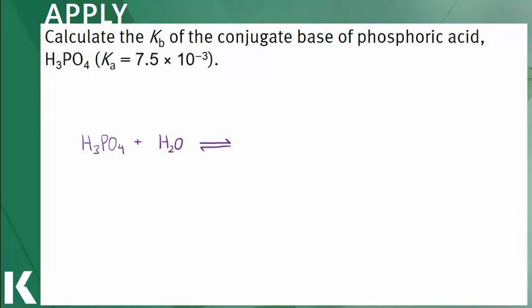The conjugate base is the result of the deprotonation of the acid. In this case, phosphoric acid will be deprotonated, which yields dihydrogen phosphate, an ion with one proton less than H3PO4. And the proton that was removed from the phosphoric acid is accepted by water, resulting in a hydronium ion.